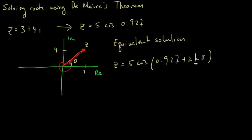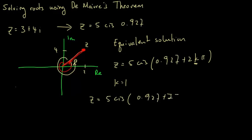So for example, if I rotate this once, k equals 1, then z equals 5 cis(0.927 + 2kπ), and that will give me back exactly 3 plus 4i.